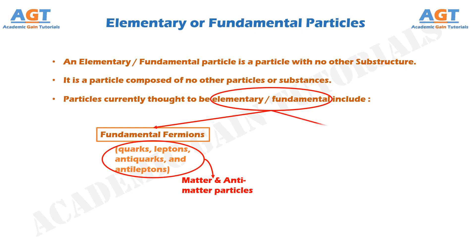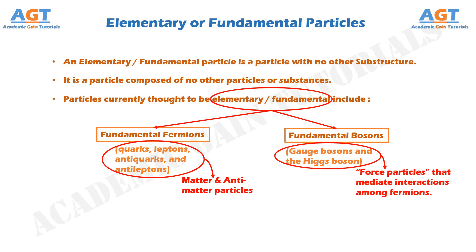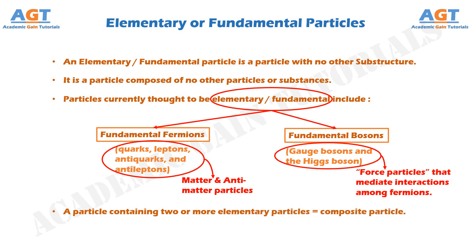Another type of fundamental particles currently known are the fundamental bosons, which includes gauge bosons and the Higgs bosons, which are generally called the force particles that mediate interactions among fermions. A particle that consists of two or more elementary particles is a composite particle.